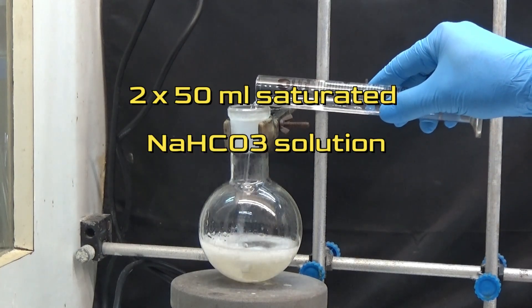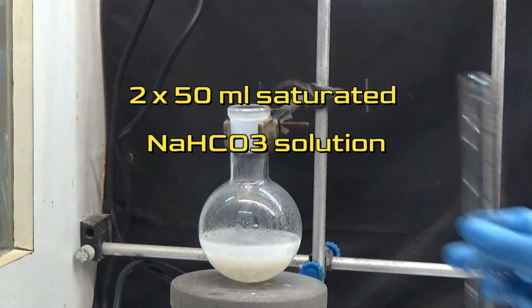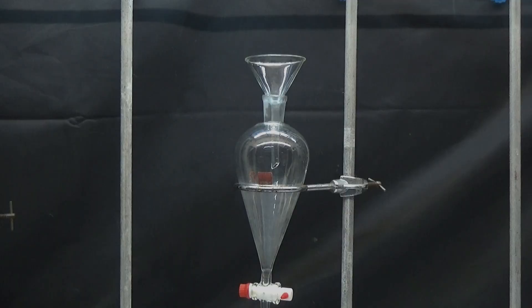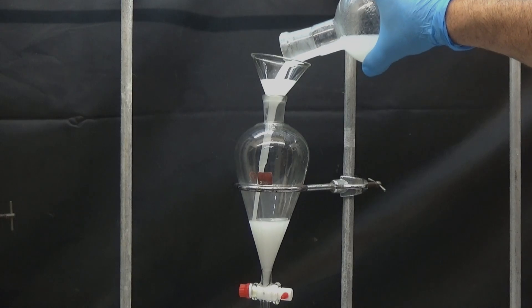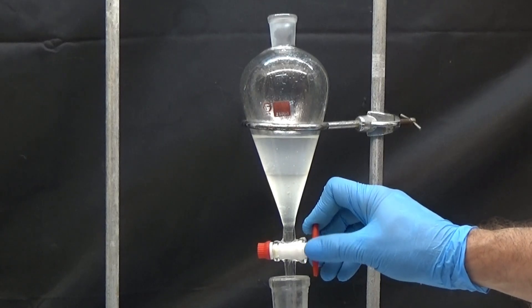After cooling, the remainder of the distillation is washed twice with 50ml of saturated sodium hydrogen carbonate solution. Separate the organic phase and the aqueous phase with a separating funnel. The aqueous phase is discarded.